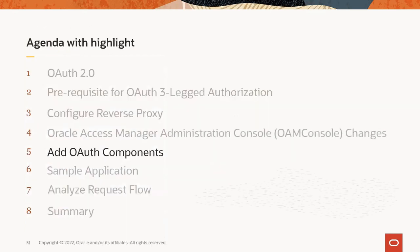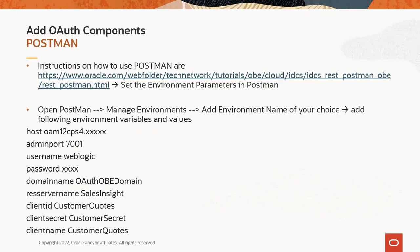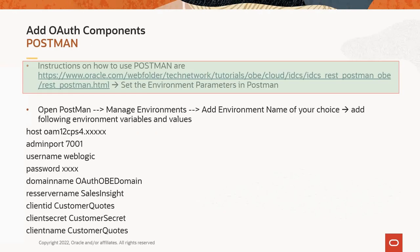In this section, we'll review how to add OAuth components. Subtopics are listed on this slide: we'll check how to use Postman and review how to add an identity domain, resource server, and client. If you are new to Postman, please consider reviewing the link provided — it describes how to use it for REST API calls. The article is specific to Oracle Identity Cloud Service and may not be fully applicable to OAM. To add an environment, use step two of the article and navigate to the path to add the environment variables listed in the slide.